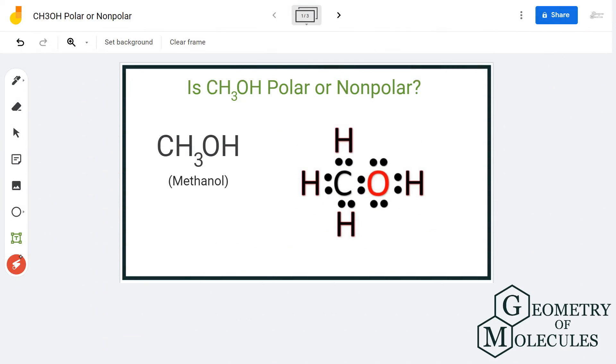Hi guys, in this video we are going to determine the polarity of CH3OH, the chemical formula of methanol. It is made up of one carbon atom, three hydrogen atoms, and an OH functional group which represents alcohol.